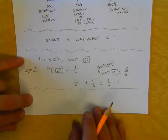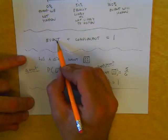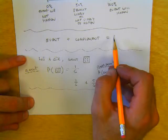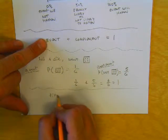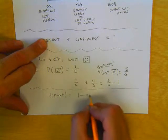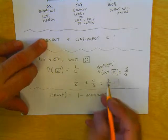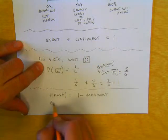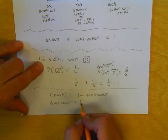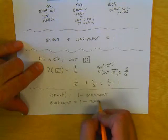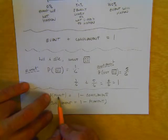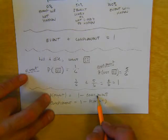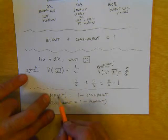This leads us to: if we know that the event plus the complement equals 1, we can say the probability of the event equals 1 minus the complement. Or, the complement of the event equals 1 minus the probability of the event. Sometimes you'll want to know the probability of an event and it's very hard to figure out, but it turns out it's very easy to figure out the complement. So what you would do is find the complement, subtract it from 1, and then you get the probability of the event.